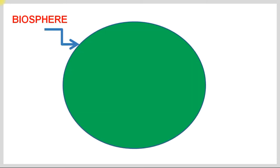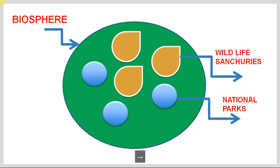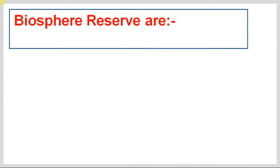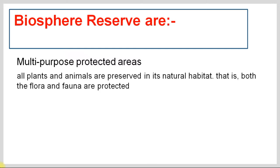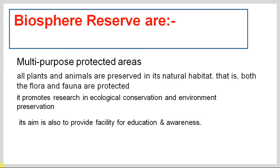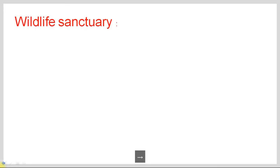In Wildlife Sanctuaries, flora and fauna are kept. If I talk about biodiversity, imagine a large circle — if biodiversity is the whole area, then National Parks and Wildlife Sanctuaries are a small part of it. Biosphere Reserves are a very big area where there are many restrictions. The main aim is that they provide a facility for education and awareness.